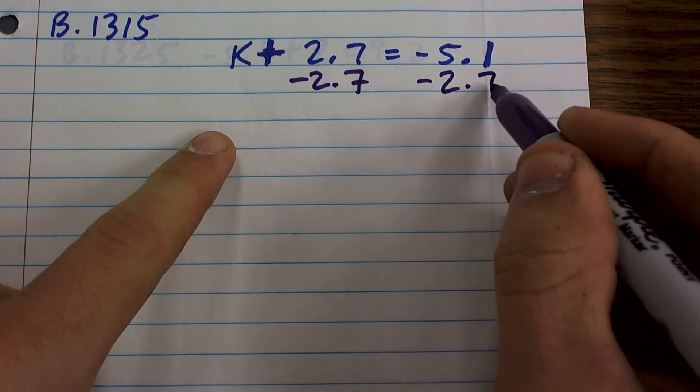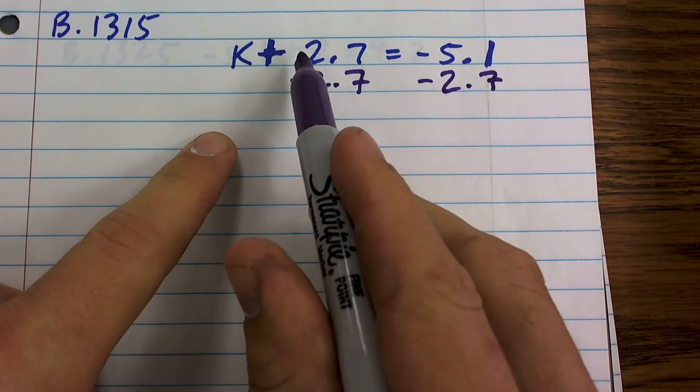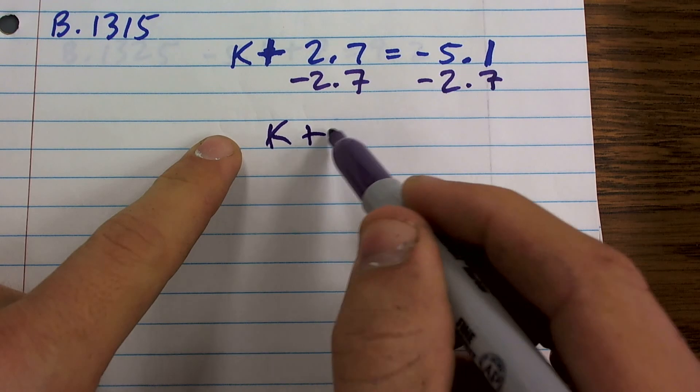Now, I need to make sure I subtract 2.7 on both sides by using the subtraction property of equality. 2.7 minus 2.7 is going to provide me with 0.